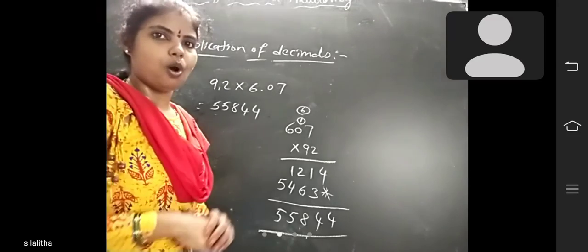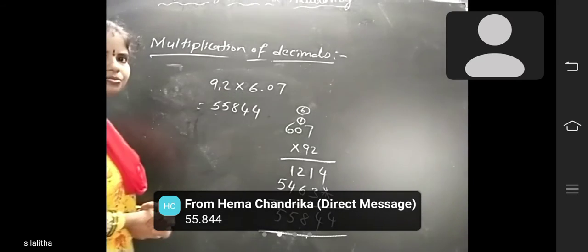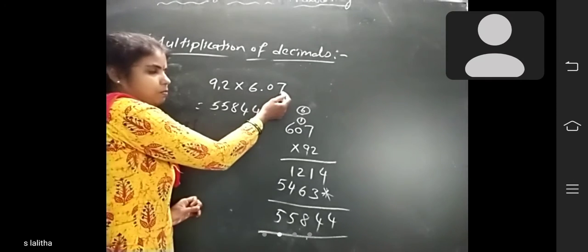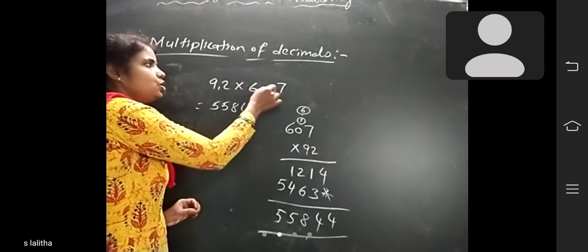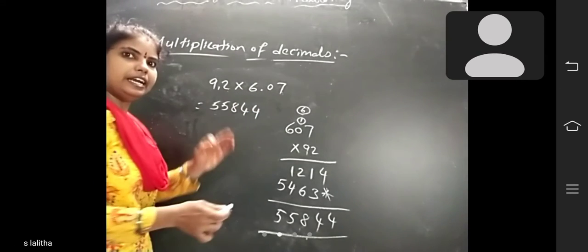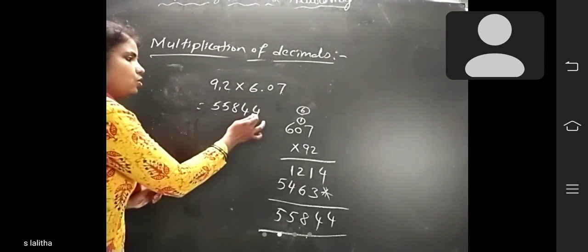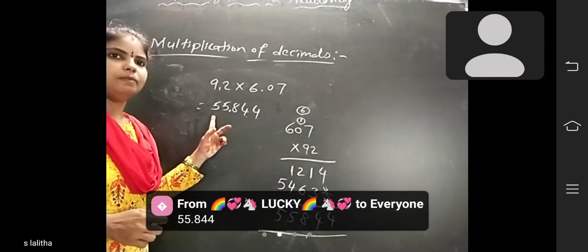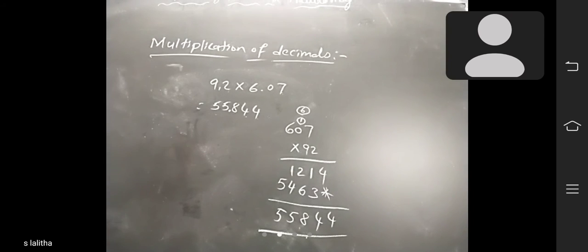Place the decimal point 3 places from the right in 55844: count 1, 2, 3 from the right — place the decimal point there. So the answer is 55.844. Did you understand?